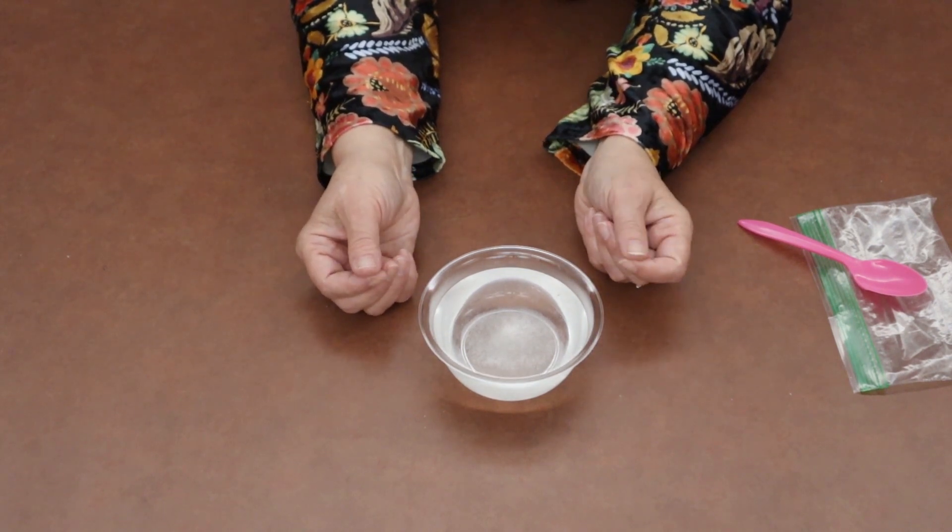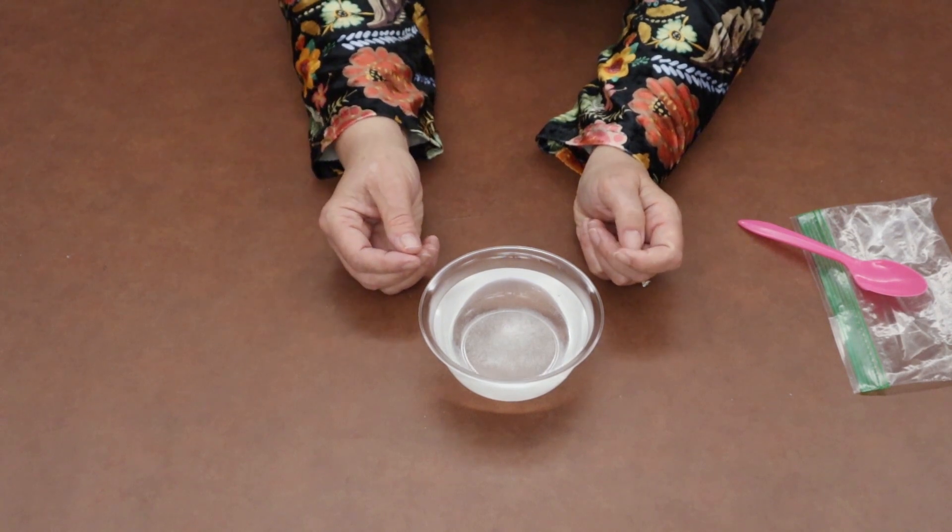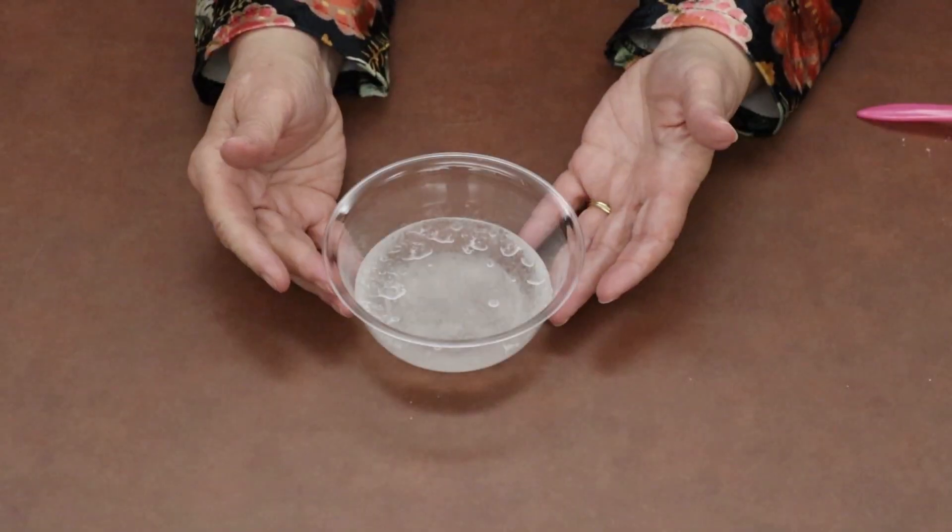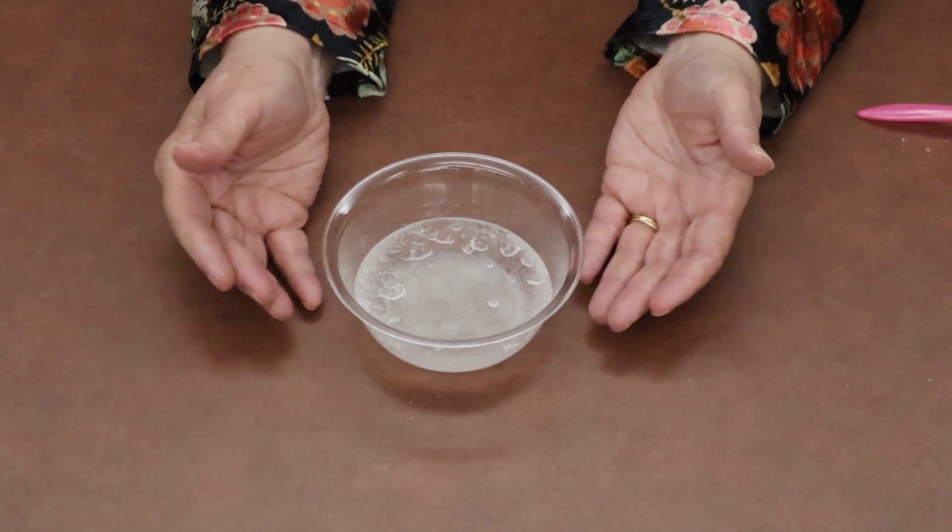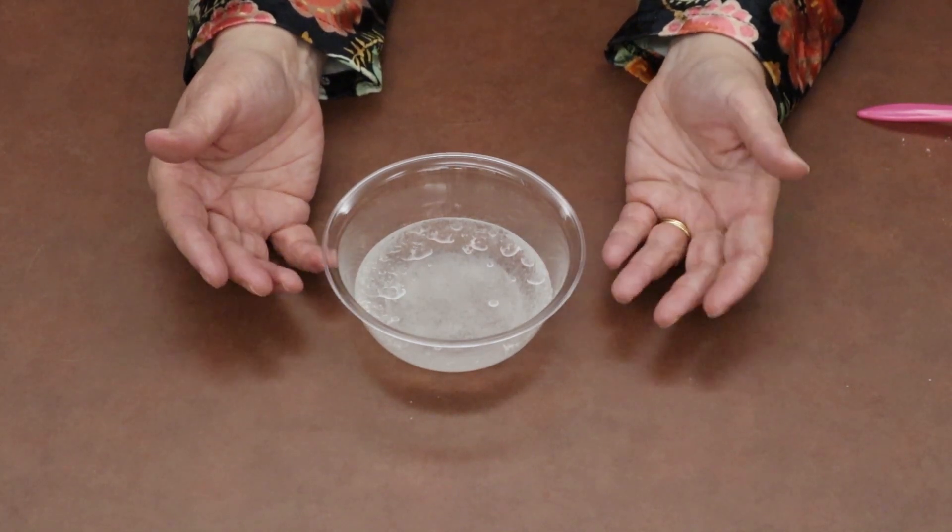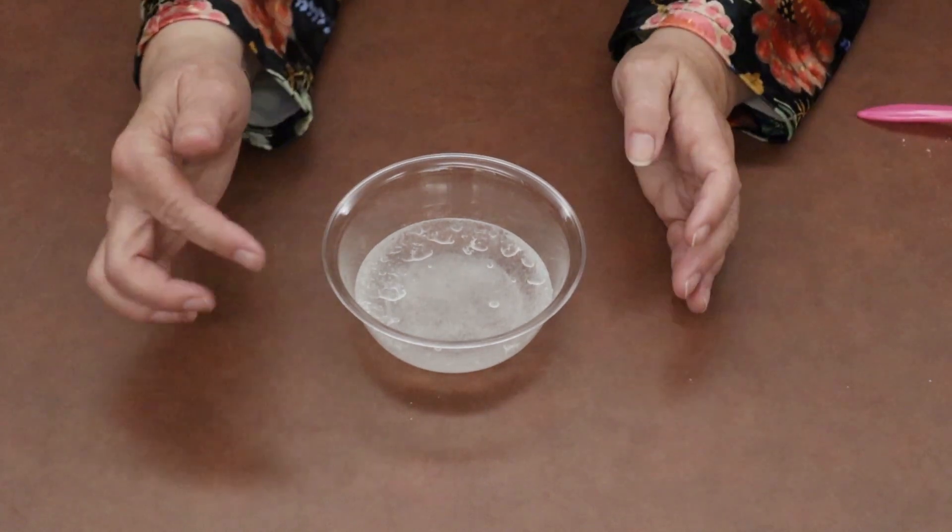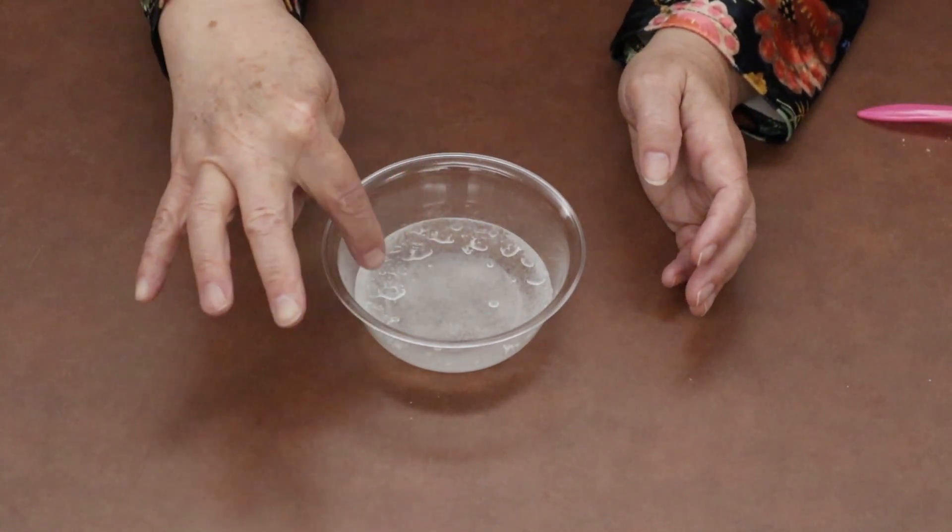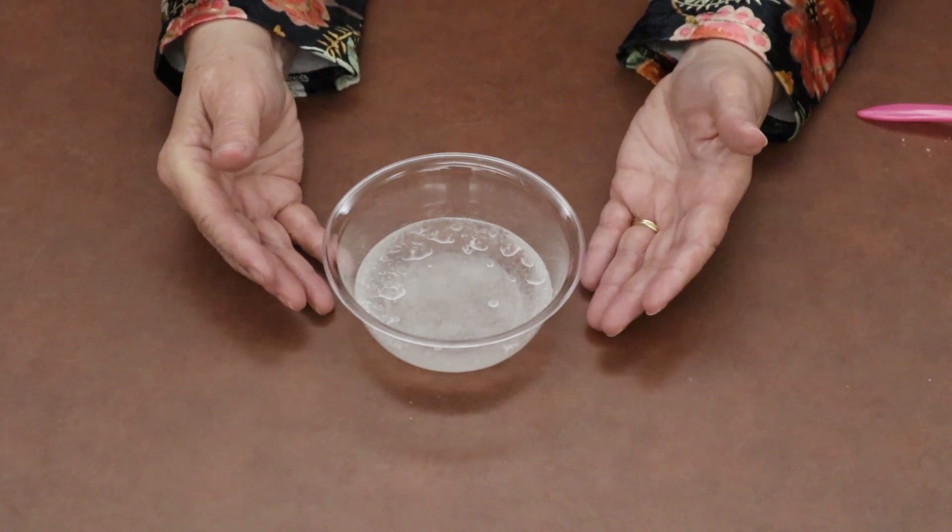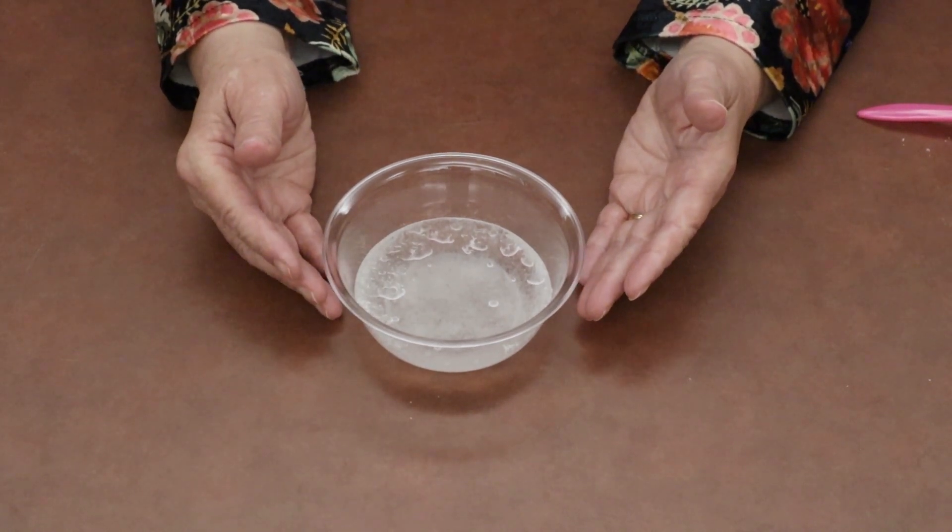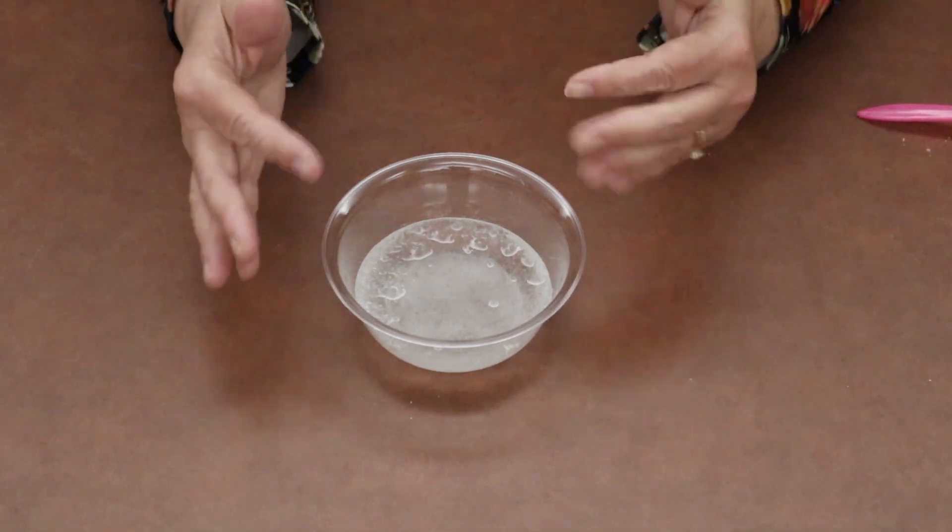And you will have something that looks like this. This is what your experiment's going to look like once you take it out of the refrigerator after leaving it overnight. You're going to see the crystals forming. You're going to have extra water, and that's okay, and that'll probably make it a little difficult to see your crystals in the bottom of your bowl.